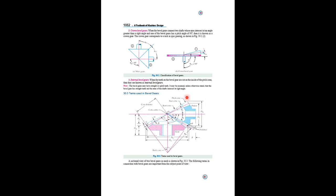The terms used in bevel gears are exactly the same as those used in spur gears and helical gears, but with some differences. For example, parameters like pitch, pitch circle diameter, and module have different values. Just as the module for spur gears is m, for helical gears the module becomes m·cos β.